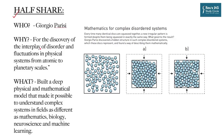Giorgio Parisi has been awarded the Nobel Prize for the discovery of the interplay of disorder and fluctuations in physical systems from atomic to planetary scale. He built a deep physical and mathematical model that made it possible to understand complex systems in fields as different as mathematics, biology, neuroscience, and machine learning. In layman's terms, imagine a box full of balls — every time these balls are squeezed together, a new irregular pattern forms despite being squeezed in exactly the same way. Dr. Parisi discovered a hidden structure in such complex disordered systems and found a way of describing them mathematically.